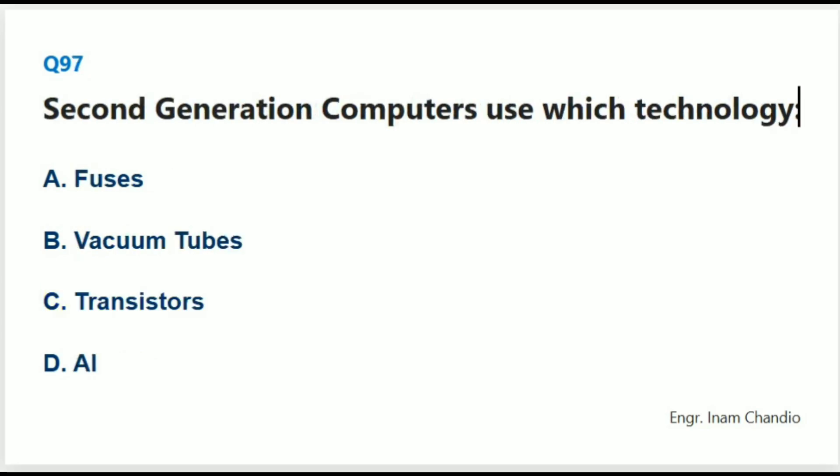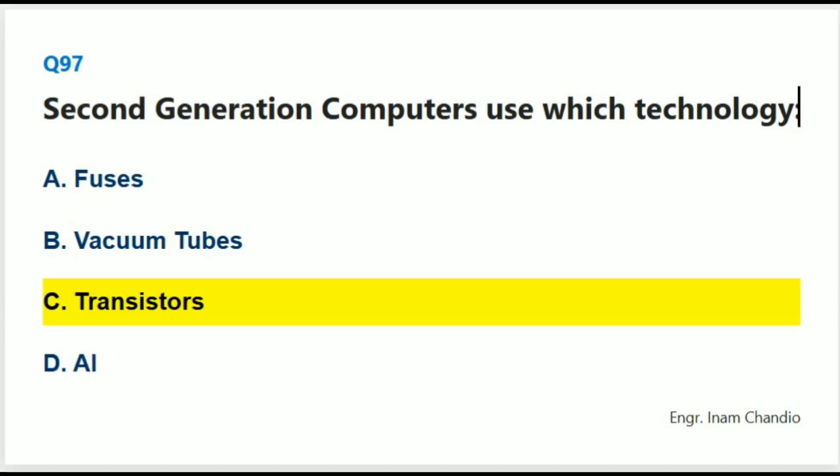Second generation computers use which technology? The correct answer is C. Transistors.